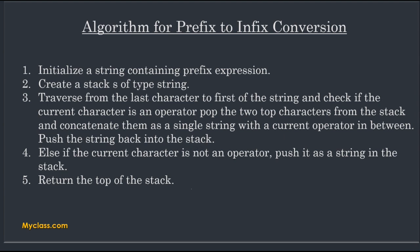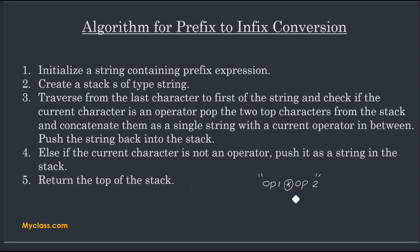We pop the two topmost elements: the first top value is operand one and the second top value is operand two. Then we perform this operation, making a string by concatenating operand one, the operator, and operand two, and we push that string back into our stack.